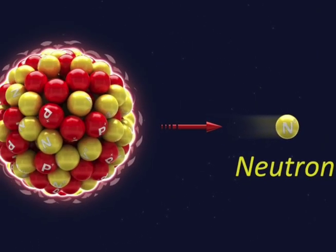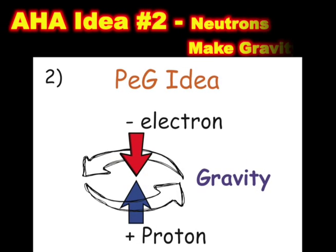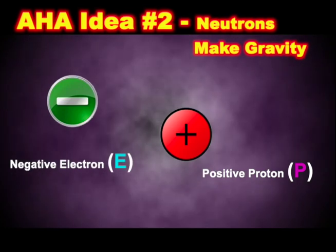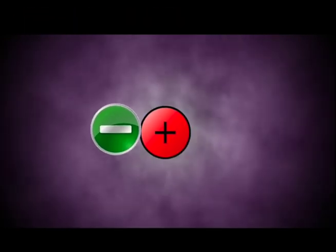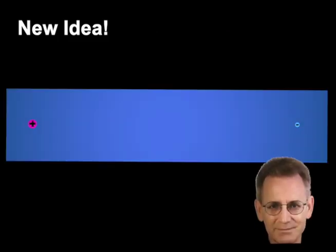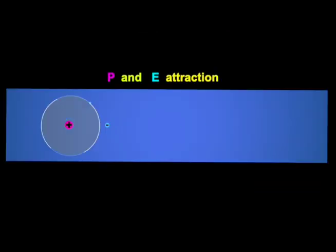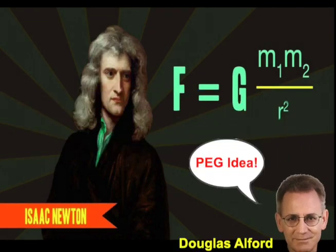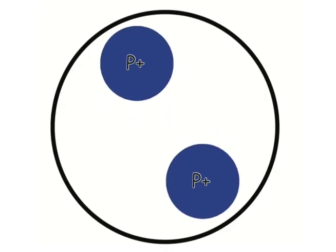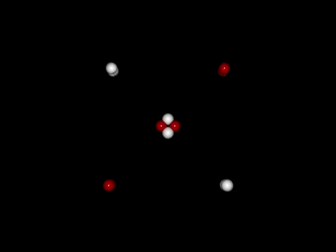What do neutrons do? In a neutron, the positive proton and negative electron pull very close together. Here is the new aha idea: this P and E attraction is what makes gravity. I call this the PEG idea. Positive bits want to push apart, and it is neutron gravity that holds the positive protons together in the nucleus.